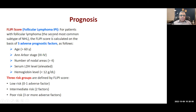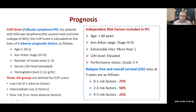For patients with follicular lymphoma, the second most common subtype, the FLIPI score is calculated on five adverse prognostic factors. Age above 60, Ann Arbor stage three or four, number of nodal sites, LDH elevated, and hemoglobin level. All are the same as IPI except that FLIPI includes hemoglobin instead of performance status. In the FLIPI — Follicular Lymphoma International Prognostic Index — if hemoglobin is less than 12g/dL, we give one point. Intermediate risk is two to three points and poor risk is three or more.